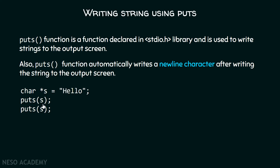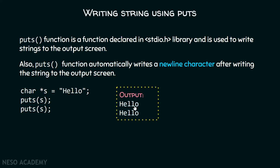Apart from this, puts automatically adds a newline character after writing the string to the output screen. So the output of the program shows 'hello' printed, then a newline is automatically added, meaning the next string will start from the new line.